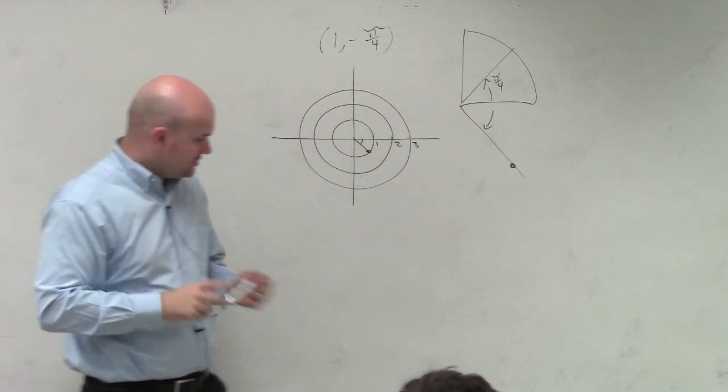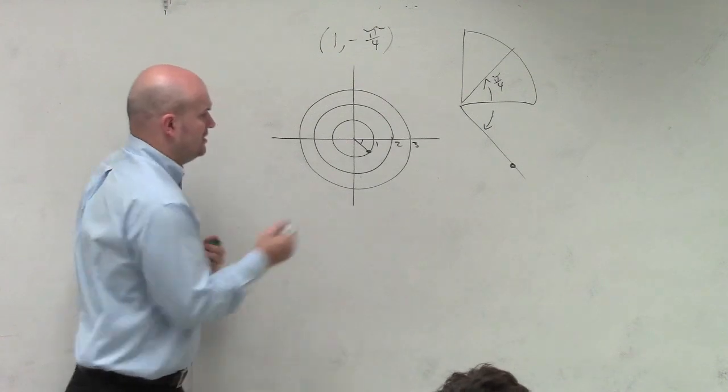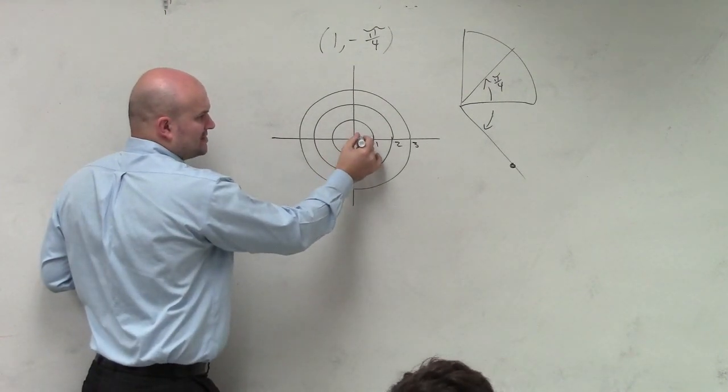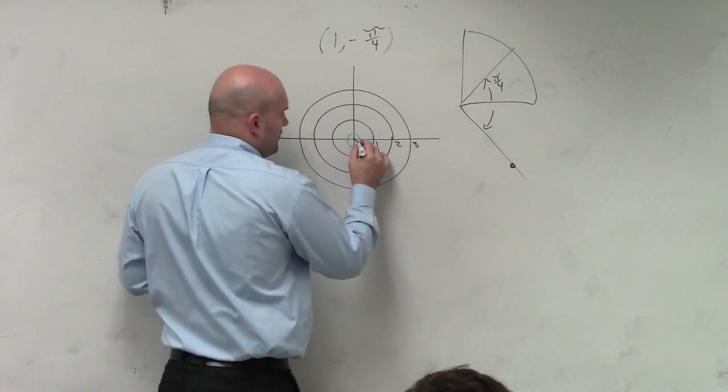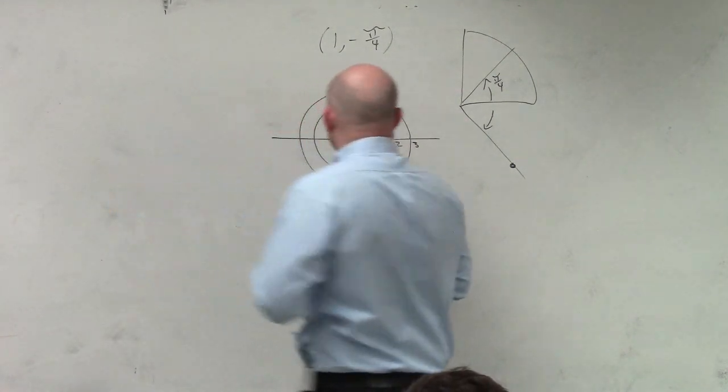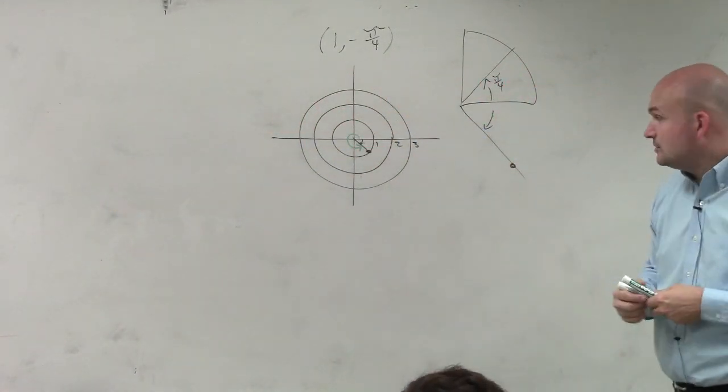Well, what we could do is we could also do the positive angle. Instead of doing the negative, we could also say what about the positive angle? Because right there, that's the negative form, right? So the distance from the center is still going to be 1.